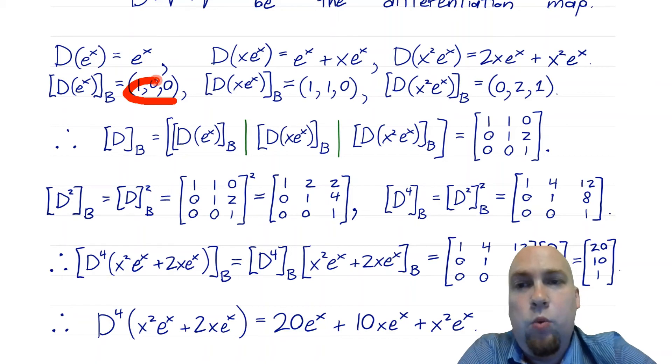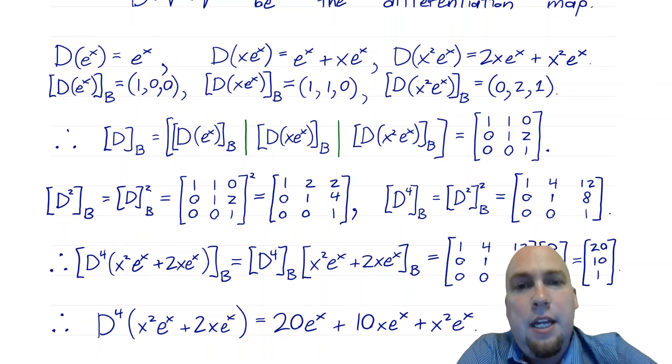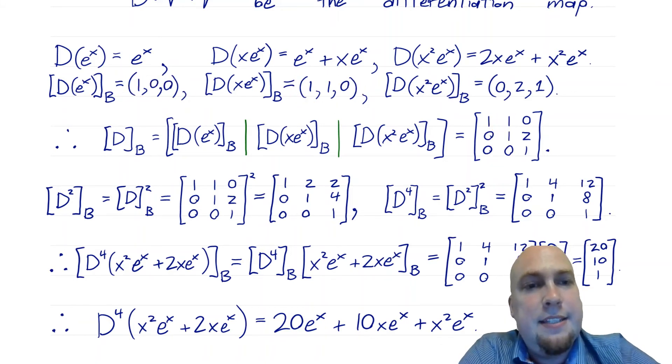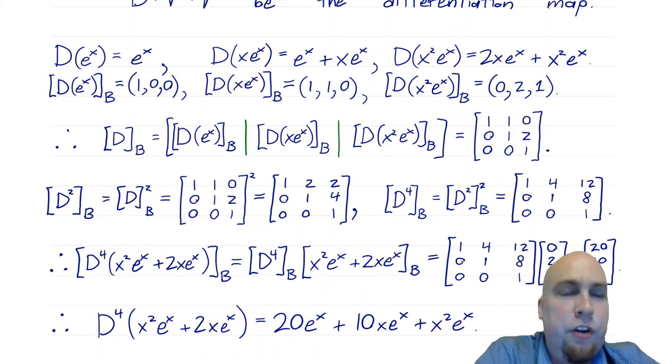These are the coordinate vectors of D applied to the basis vectors. To construct the standard matrix, you stick those in as columns: (1, 0, 0) is the first column, (1, 1, 0) is the second column, and (0, 2, 1) is the third column.